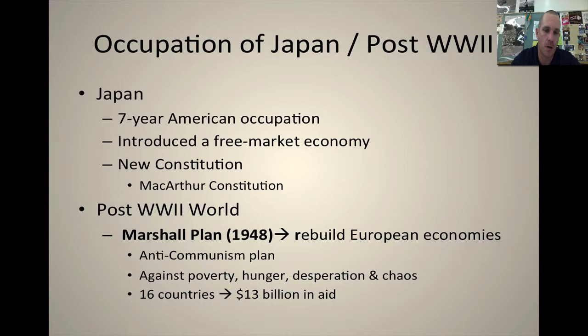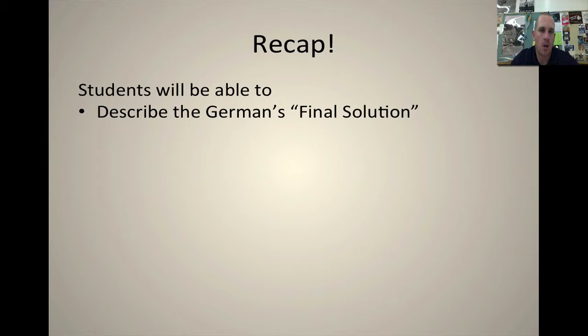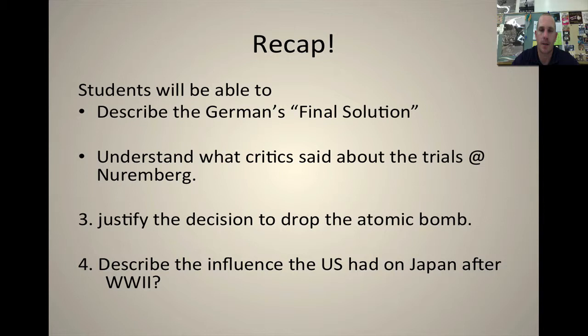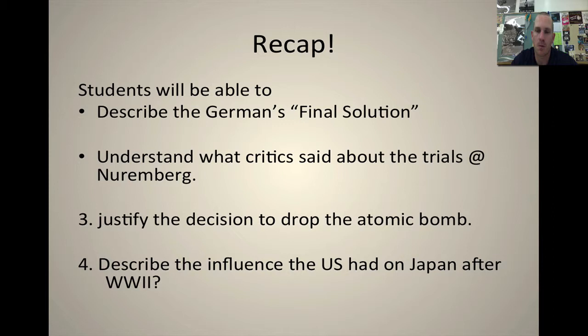So to review: you should be able to describe the Germans' final solution — moving from mass graves to gas chambers and crematoriums. Understand what critics said about the trials at Nuremberg: critics said it wasn't harsh enough, and the biggest takeaway is that just following orders is not a sufficient answer. Number three, the decision to drop the bomb: it would cost over one million Allied lives to invade, or end the war within a few days — they chose to end it. Number four, describe the U.S. influence on Japan: we completely redid their constitution, occupied them, and rebuilt their entire economy and market system. If you have any questions, send me an email. This was the last screencast for World War II. Thank you for watching.